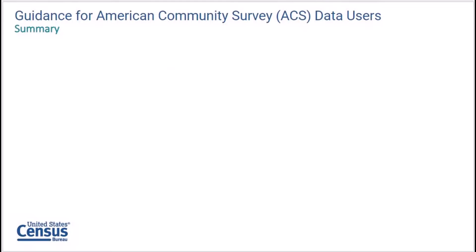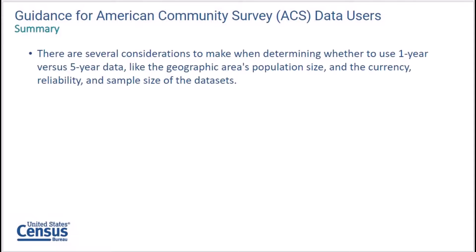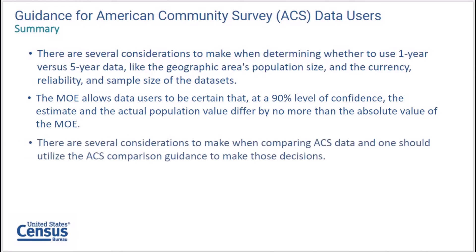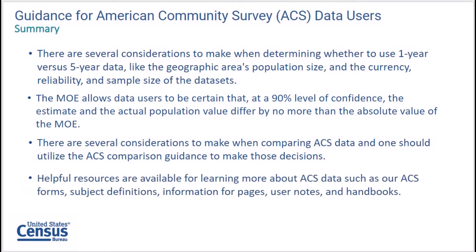Today, you've learned there are several considerations to make when determining whether to use one-year versus five-year data, like the geographic area's population size, the currency or reliability of the data, and sample sizes of the data sets. The margins of error are provided to help us create confidence intervals and how they factor into making comparisons with ACS estimates. There are several considerations to make when comparing ACS data, and one should utilize the ACS comparison guidance to make those decisions. You also learned about helpful resources such as our ACS forms, subject definitions, user notes, and handbooks.